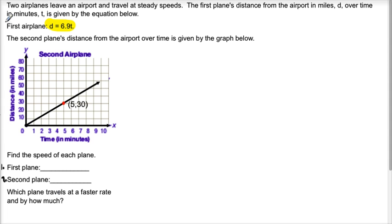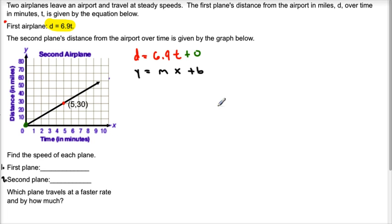Let's go from our first one. First airplane: D equals 6.9T. Again, this looks very much like y equals mx plus b, except here we don't have the y-intercept, so that means we're starting again at the origin. So the rate of change or slope is going to be 6 and nine-tenths. We can say the first plane is traveling at 6.9 miles per minute.